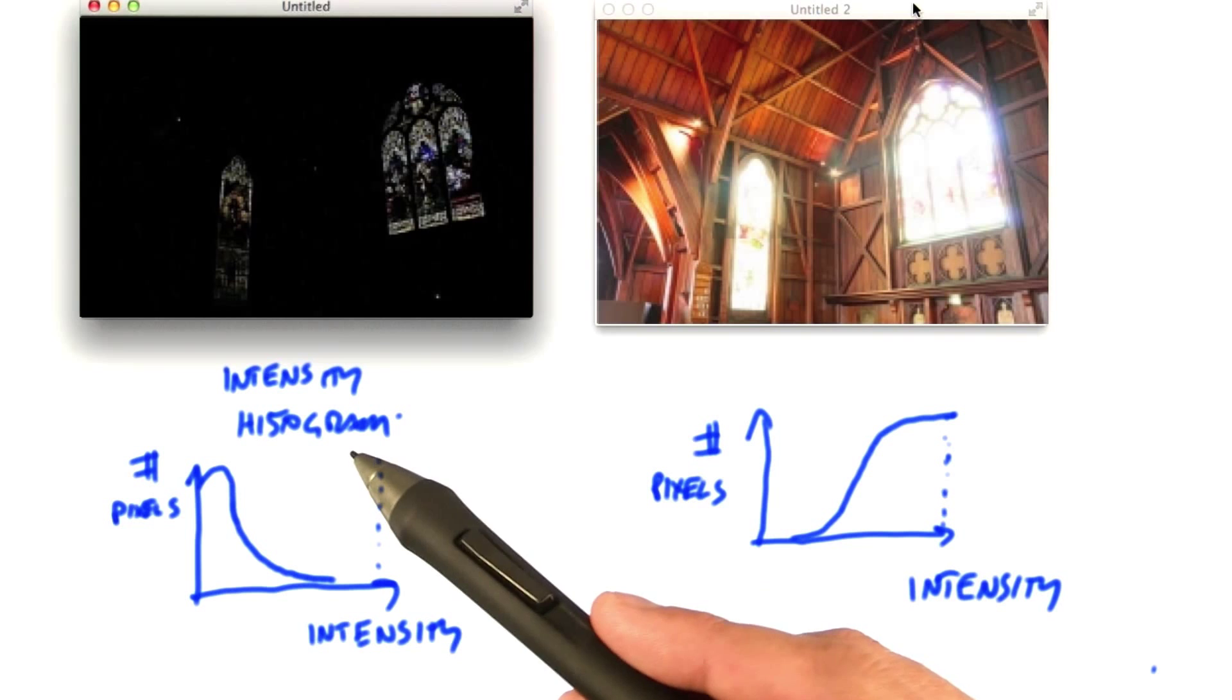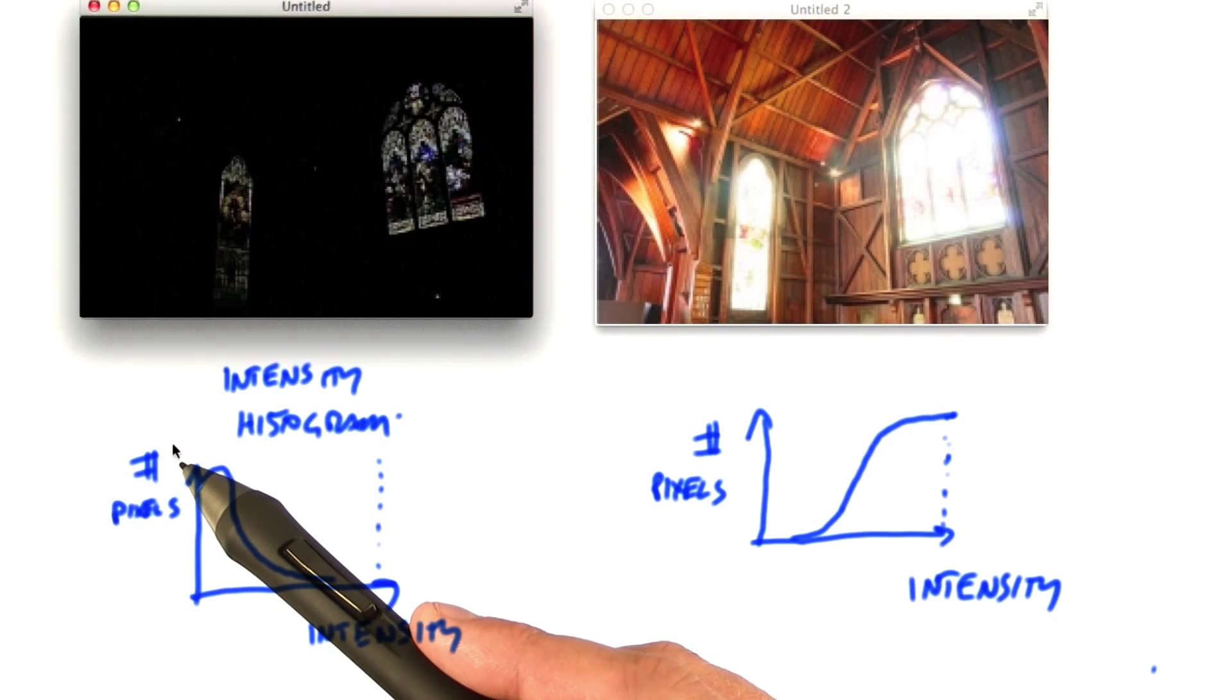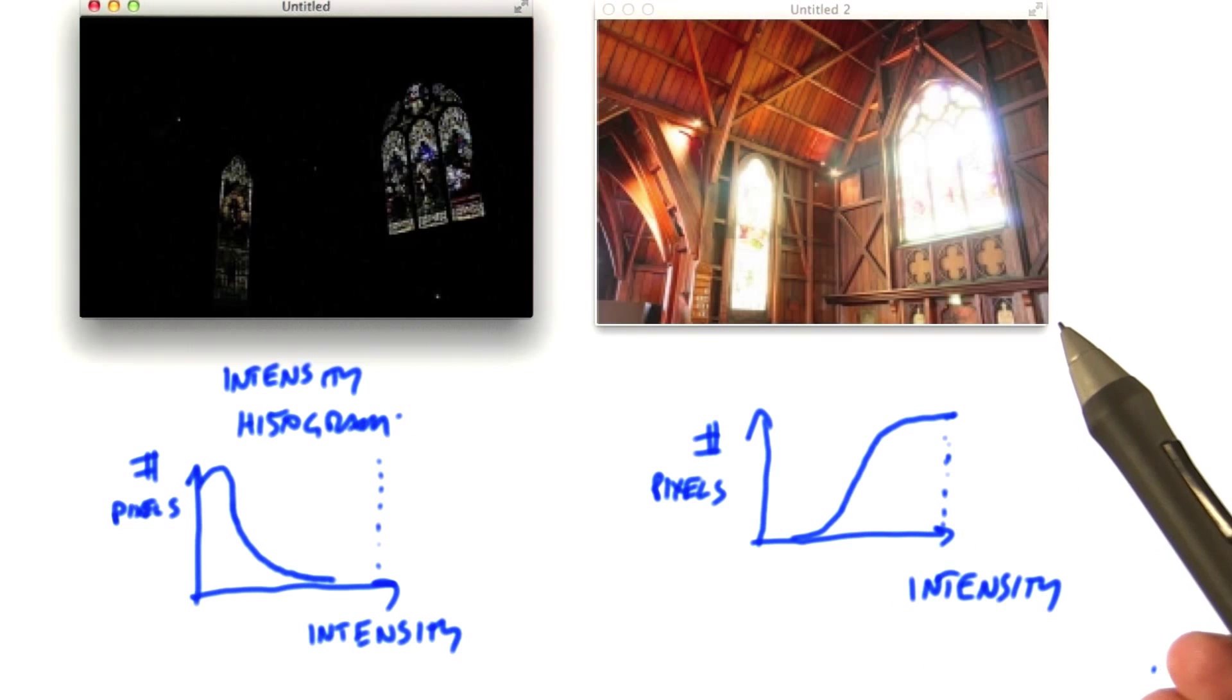In the dark image, most of the pixels are at the low end of an intensity histogram, and in the light image, they're at the high end.